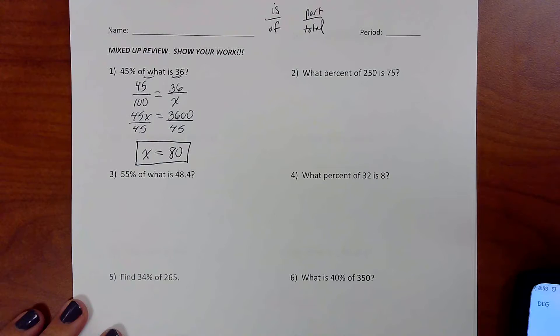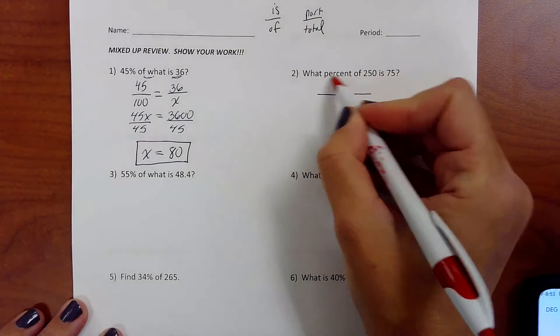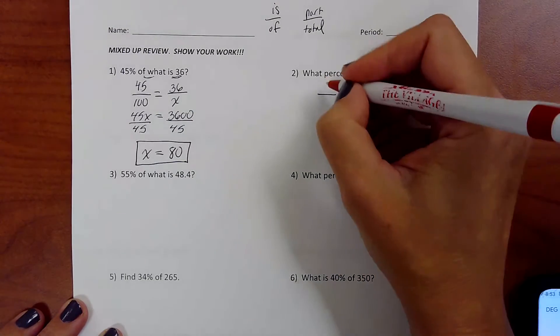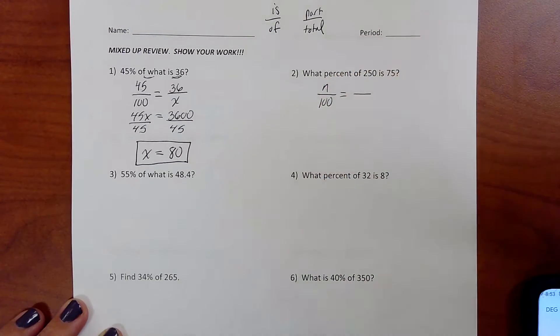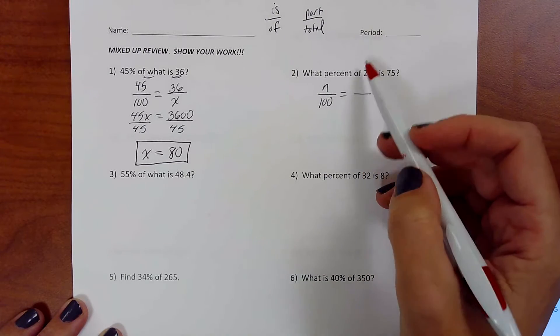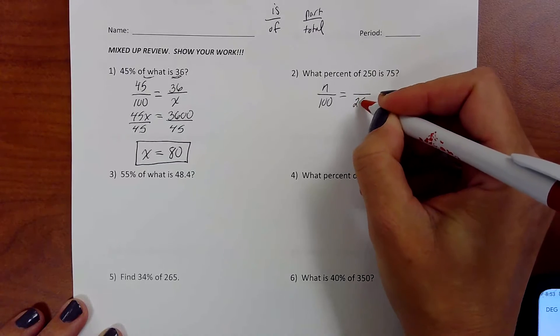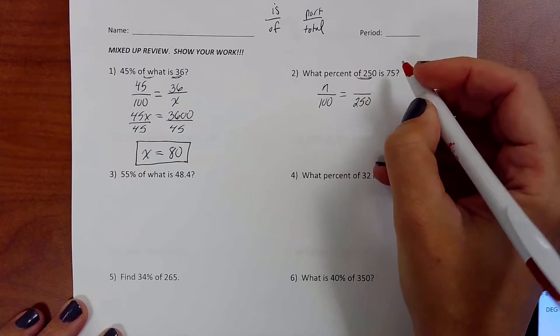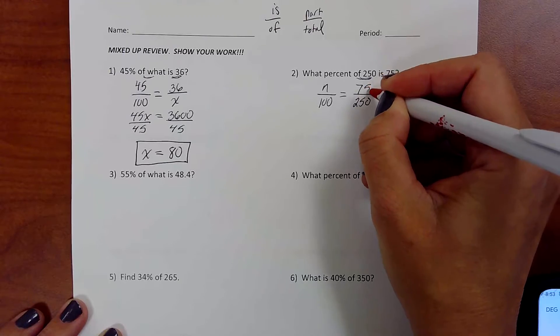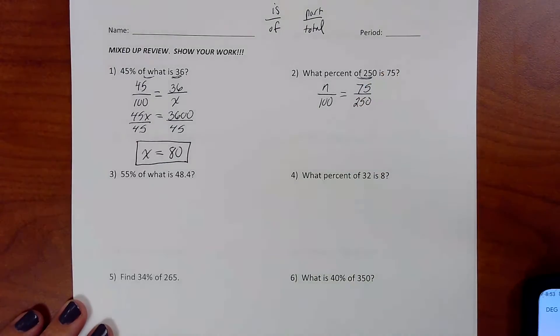Number two, what percent of 250 is 75? Okay, so this time the percent we don't know. So that's going to be n over 100. And then we could use the is over of, or you know it's always percent of the total. So you could know 250's the total, is it near the of? Yes, it is. And then 75 is near is. There you go.